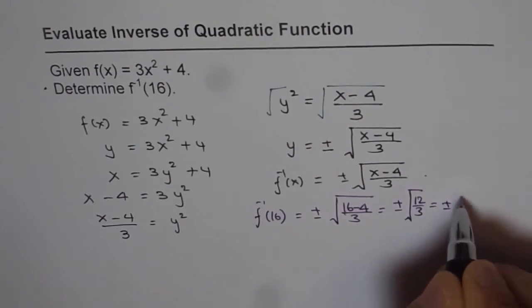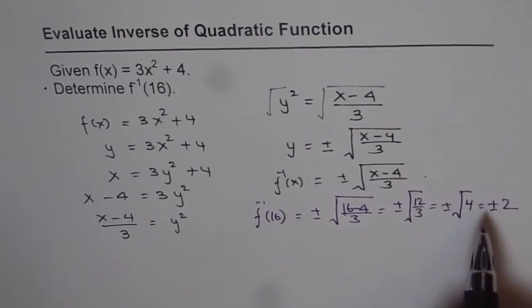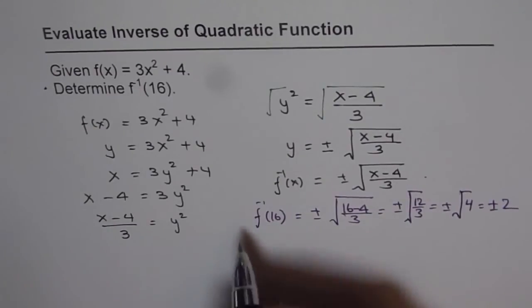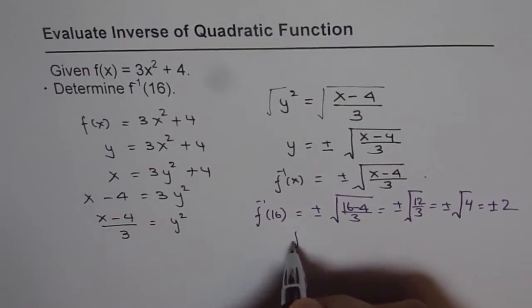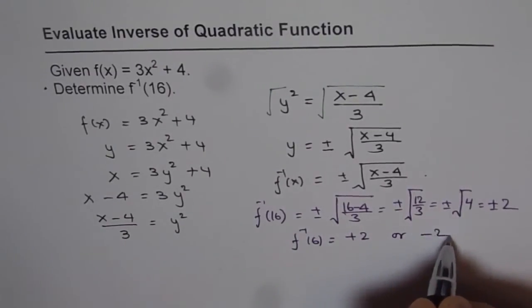That is plus minus square root of 12 divided by 3 is 4 and that is plus minus 2. Do you see we get two values for inverse of 16? So f inverse of 16 is equals to plus 2 or minus 2.